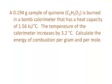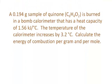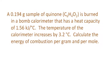A 0.0194 gram sample of quinone, C6H4O2, is burned in a bomb calorimeter that has a heat capacity of 1.56 kJ per degree Celsius. The temperature of the calorimeter increases by 3.2 degrees Celsius upon the combustion of quinone. Calculate the energy of combustion per gram and per mole.